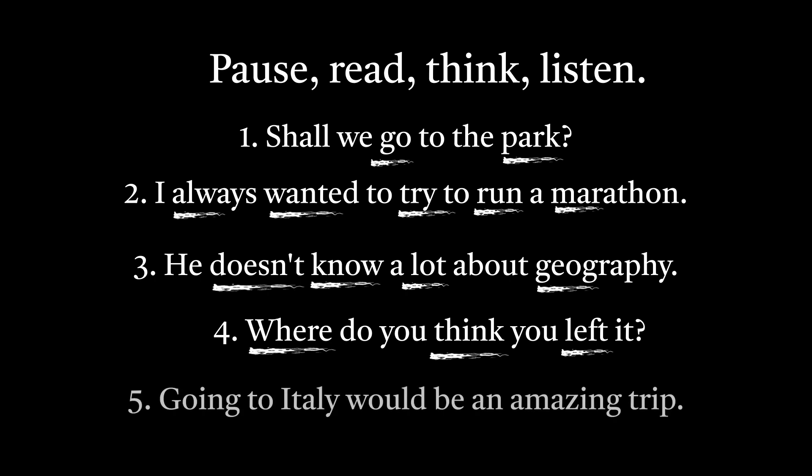And the last sentence — have a look, pause the video. Now I'll read: Going to Italy would be an amazing trip. Going to Italy would be an amazing trip. So going is a main verb and go is the stressed syllable. Italy is a noun and it is the stressed syllable. Amazing is an adjective and may is the stressed syllable. And trip is a noun, so it gets stressed. Listen and repeat with me: Going to Italy would be an amazing trip.